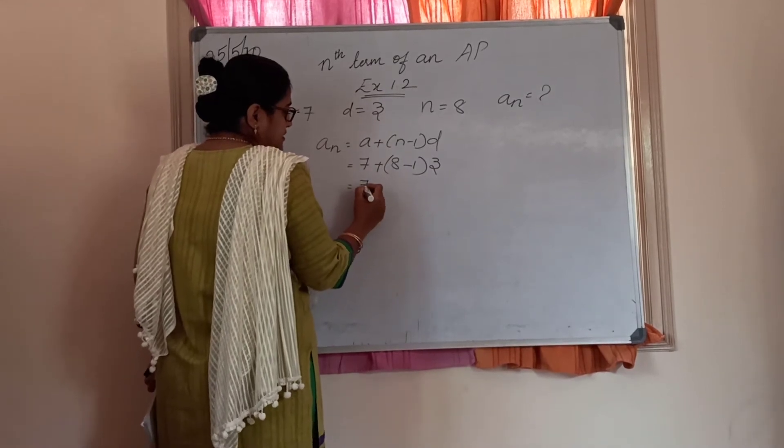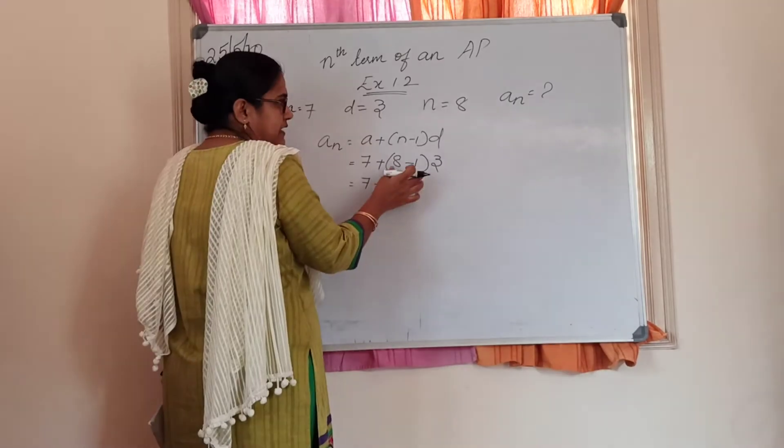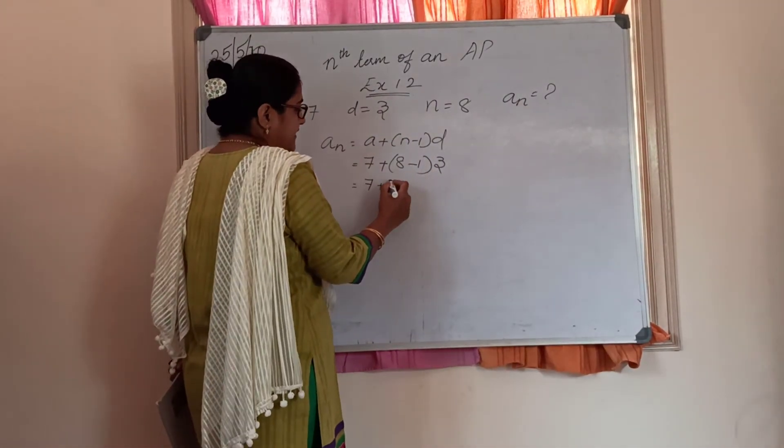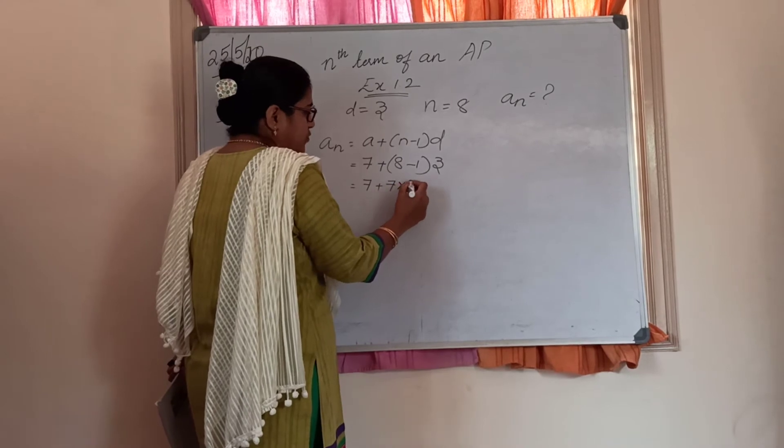Write this as such. Whatever is in the brackets must be calculated first. So 8 minus 1 is 7 into 3.